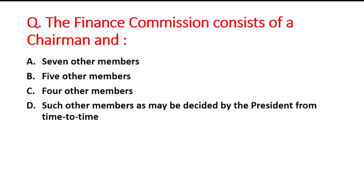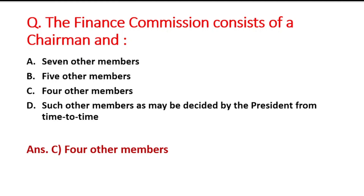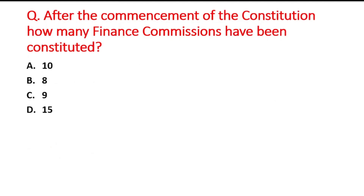Next question: The Finance Commission consists of one Chairman and how many other members? Option A is seven, B is five, C is four, D is such other members as may be decided by the President. The right answer is option C — one Chairman and four other members, making a total of 5 members. Their tenure is five years and their appointment is made by the President of India.